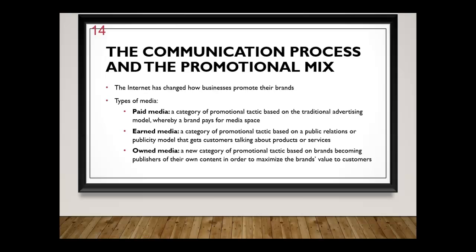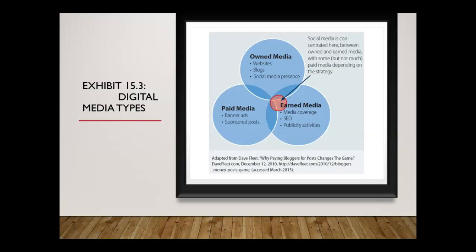The internet has changed how businesses promote their brands. There are three types of media. There's paid media — that's traditional advertising where you pay for media space. There's earned media — a promotional tactic based on public relations or the publicity model that gets customers talking about products or services. And then there's owned media — a newer category where brands become publishers of their own content to maximize brand value. Examples include the Victoria's Secret Fashion Show, social media accounts, YouTube, and TV shows — any media owned by the company. Social media sits centrally between owned, earned, and paid. Owned media includes websites, blogs, and social media presence.